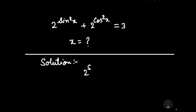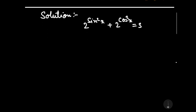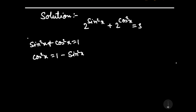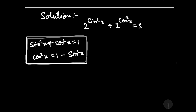It is given that 2 to the power sin²x plus 2 to the power cos²x is equal to 3. Now as we know the identity sin²x plus cos²x is equal to 1. With the help of this, we can write cos²x is equal to 1 minus sin²x.